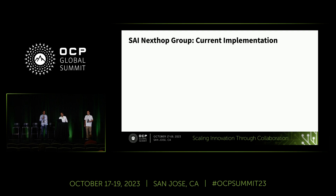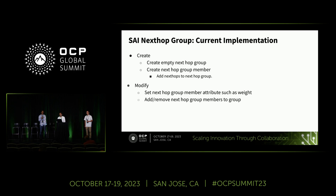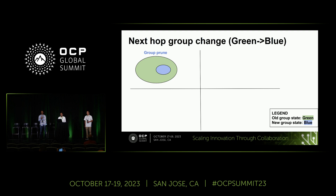Looking at the time spent in convergence: if a network event happens like a link down, it leads to a lot of forwarding entries being updated. When we looked at convergence time, we saw that next hop groups were playing a major role. In SAI today, there is support for creating next hop groups and next hop group members, which associate a next hop with that group. You can also modify next hop group member weights, delete members, and remove the group itself.